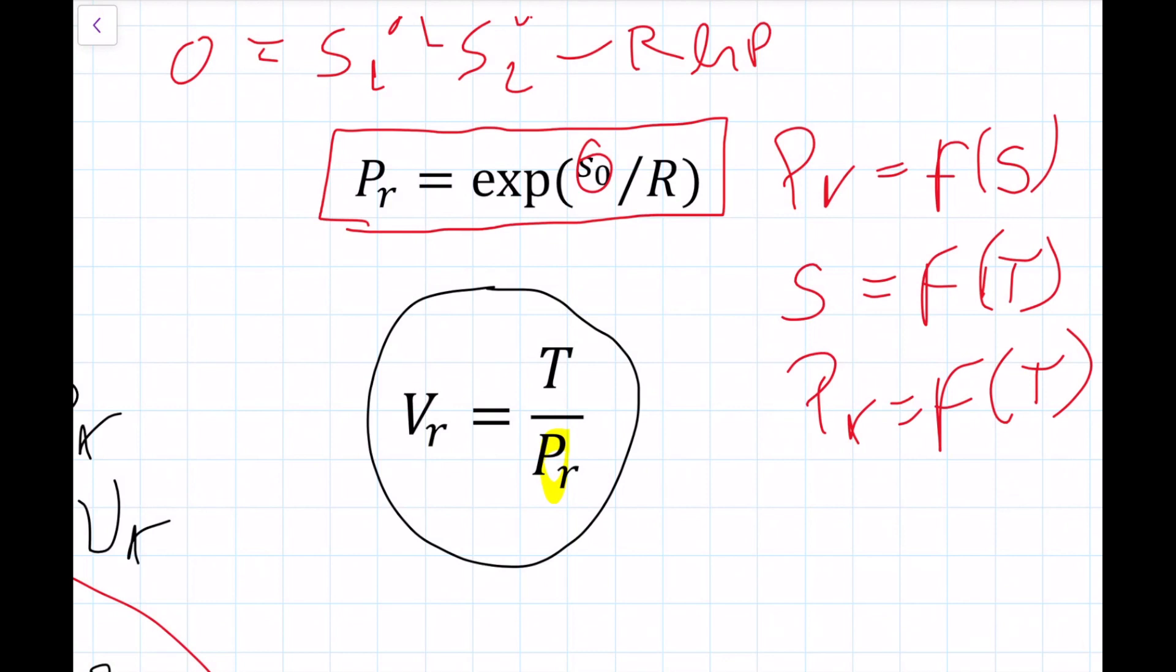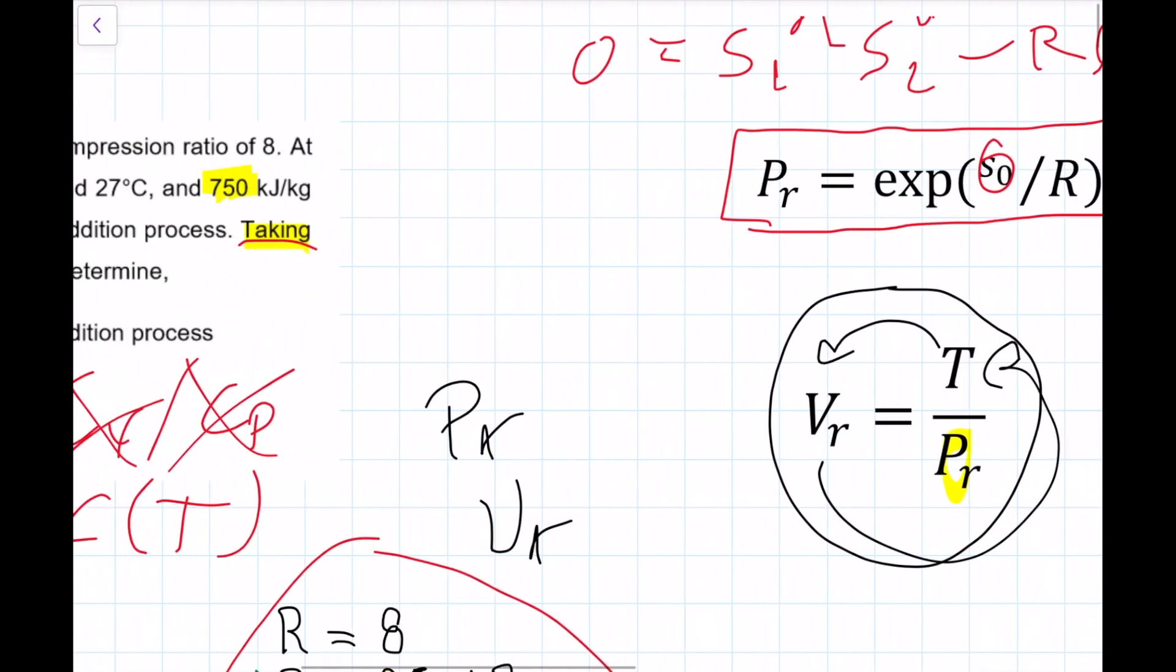Likewise, if we just use the ideal gas relationship, we can find that the relative specific volume is also only dependent on the temperature. Because it's dependent on PR and temperature and PR is dependent on temperature. So these guys, they are useful because they are linked thermodynamically only to the temperature. So if we have the temperature of any given case, we can find PR. If we have PR, we can find the temperature. There's only one PR for one temperature for every gas. Same thing applies for VR. If we have the temperature, we can find VR. If we have VR, we can find the temperature. And if it's an isentropic transformation, we can use that relationship, the ratios between the two states to solve our problem.